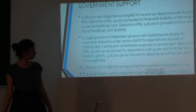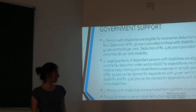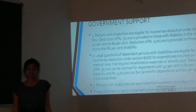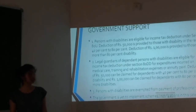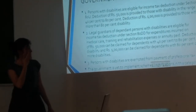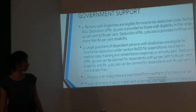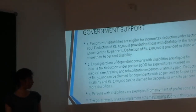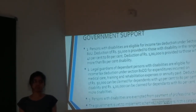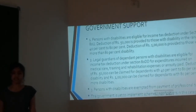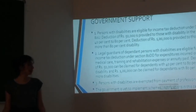People with disabilities are eligible for income tax deductions under the constitution. This deduction is based on the percentage of disability they face: 50,000 rupees for 40–80% disability and 1 lakh rupees for over 80% disability. Legal guardians of people with disabilities are also eligible for income tax deductions due to expenditure incurred on medical care, training, and rehabilitation. This deduction is also based on the percentage of disability. Patients with disability are also exempted from payment of professional tax. The government aims to implement more schemes in this category.